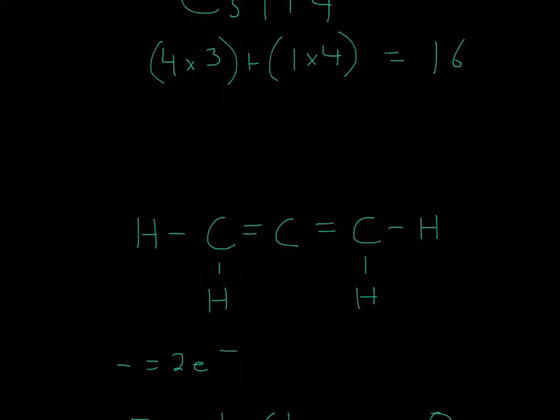So 2, 4, 6, 8, 10, 12, 14, 16. So we have all of our electrons and 0 formal charges on each of these.